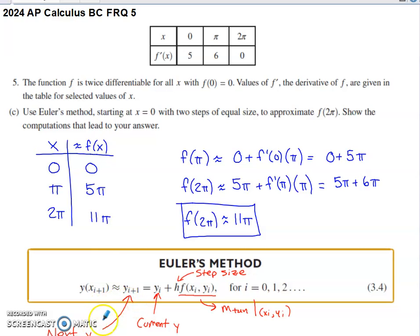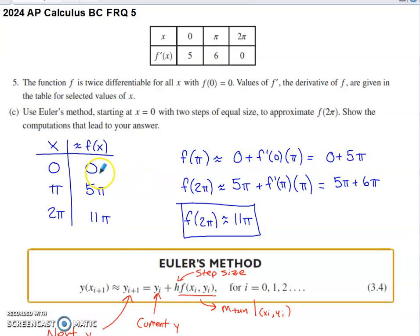Using the Euler's method formula, we generate the next y by taking the current y and adding the step size multiplied by the slope of the tangent line at the current ordered pair. Our current y is zero. The slope of the tangent line at zero comma zero is five — from the table. Our step size is pi, so we get zero plus five times pi, giving us five pi as our estimate for the function value at pi.